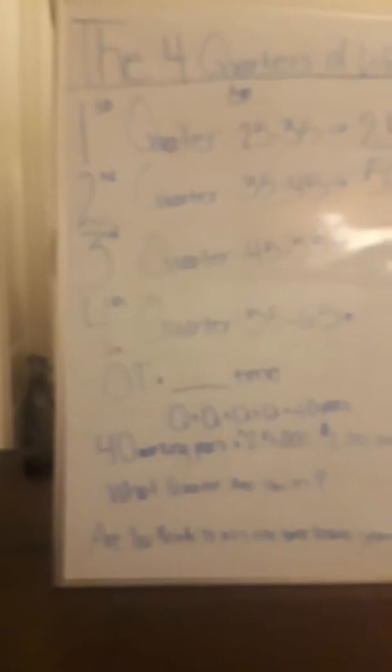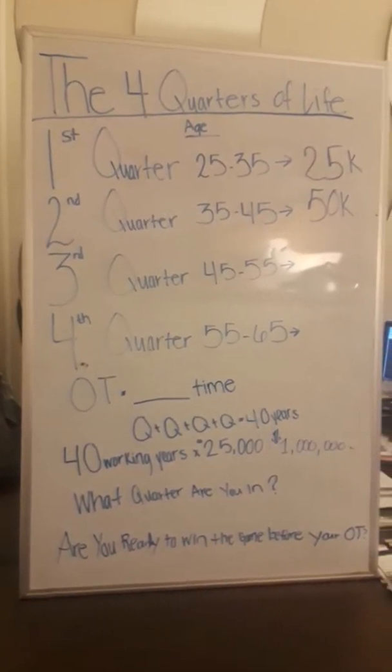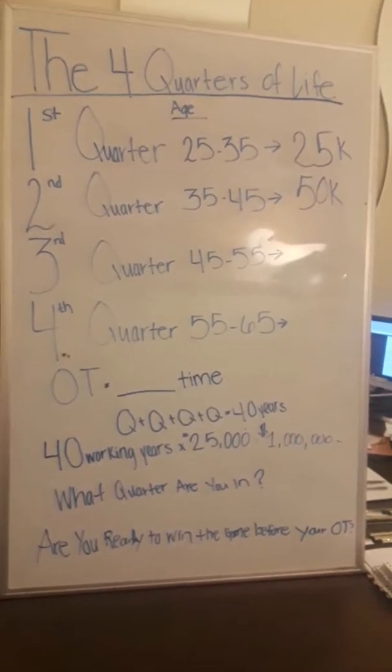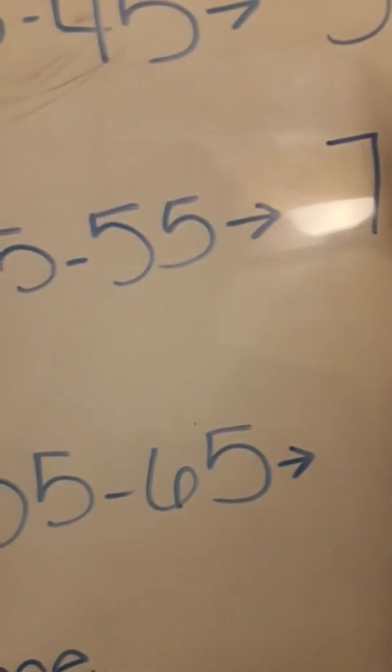Second quarter of life is the 35 to 45 age range, and you're looking at about $50,000 that you should have put away, again working for you in some way.